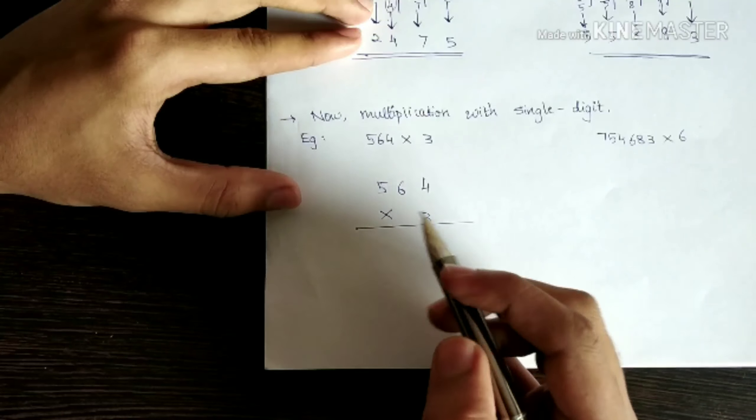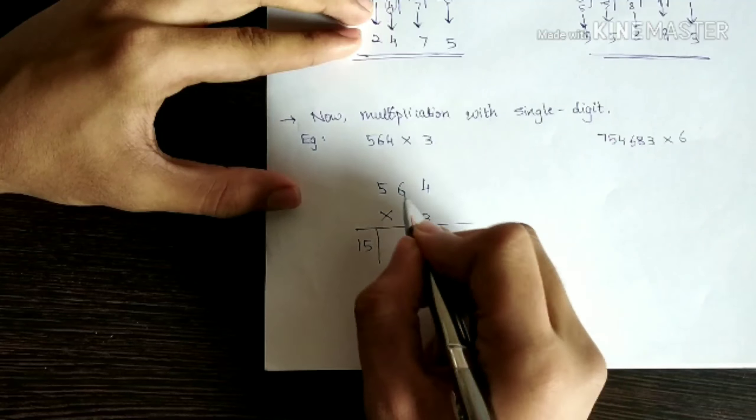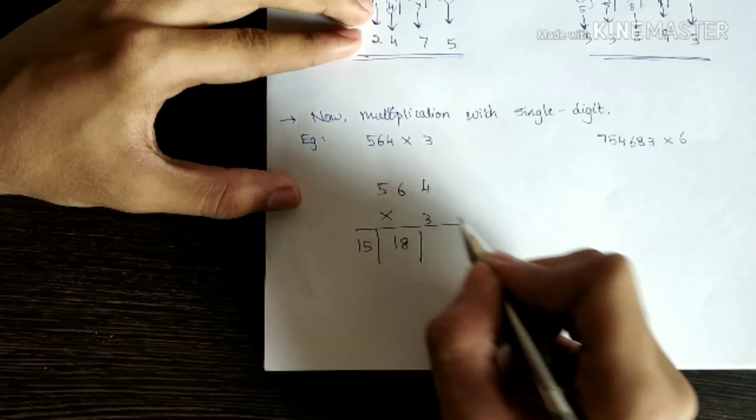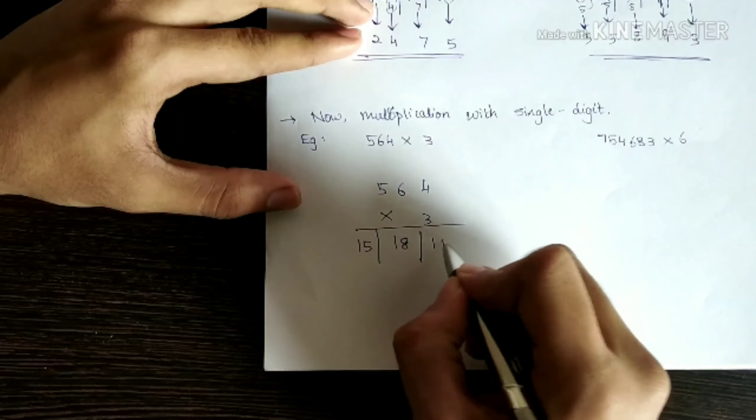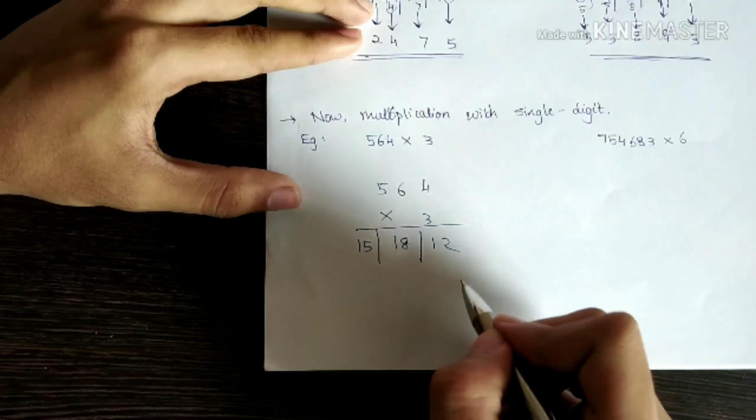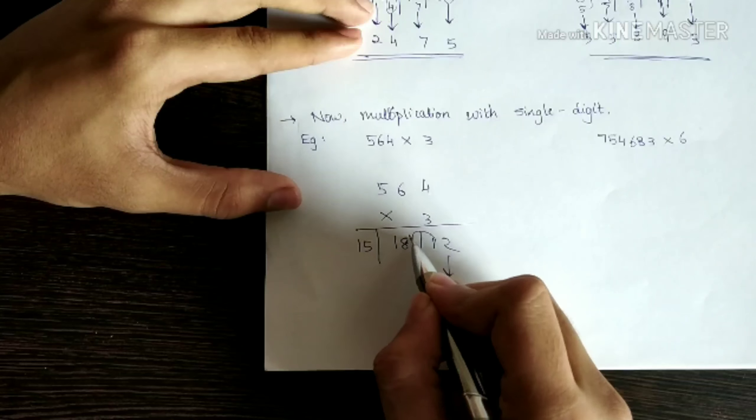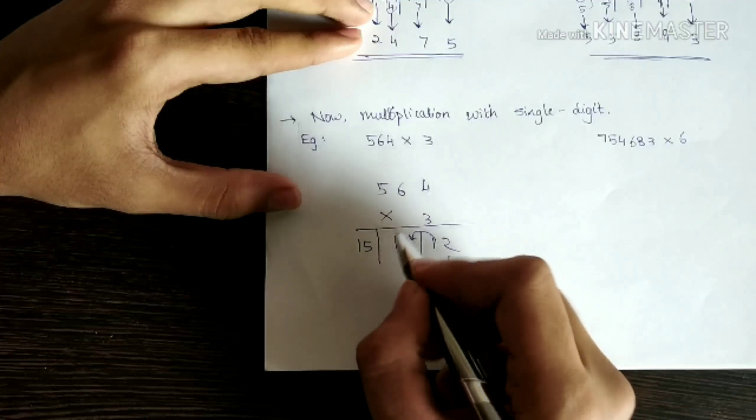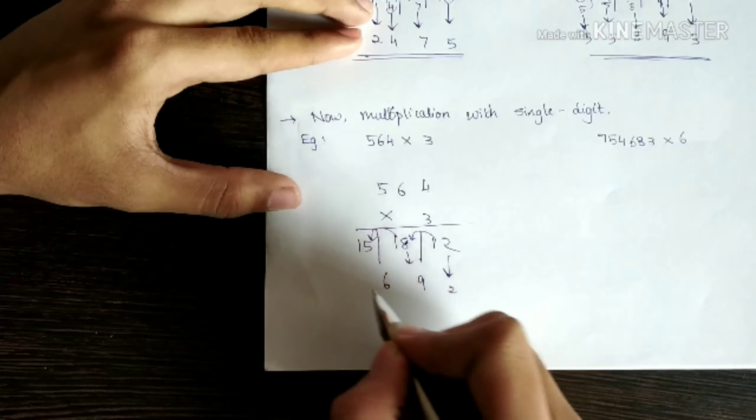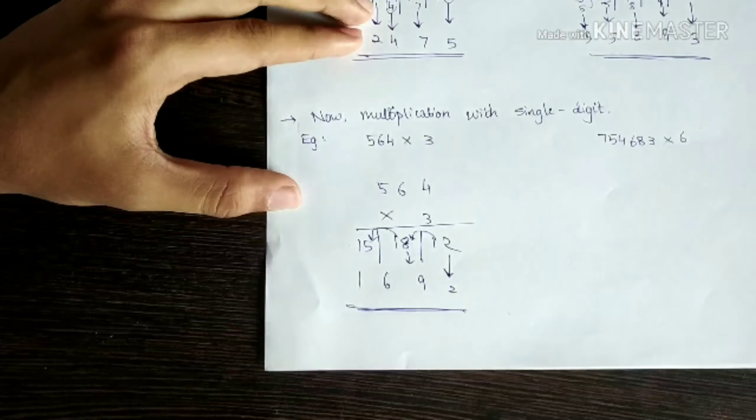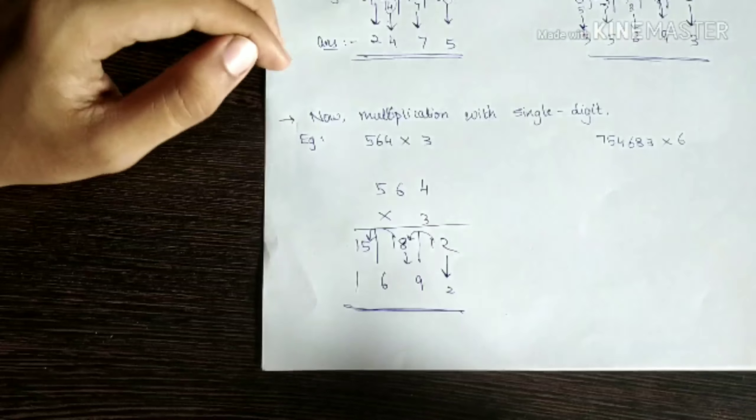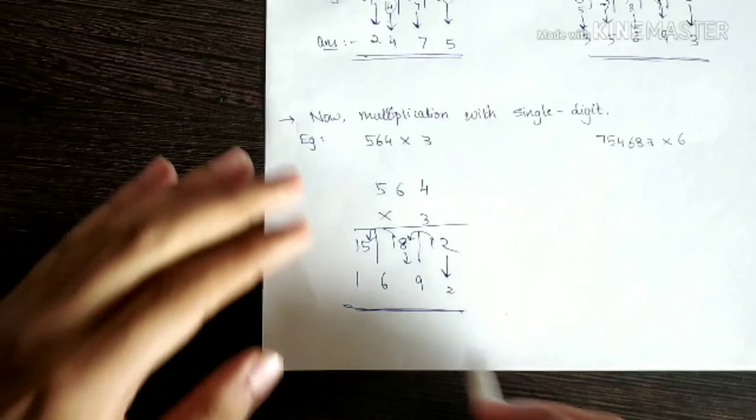Now what is three times five? It is fifteen. What is three times six? That is eighteen. What is three times four? Twelve. Now apply the balancing rule. Drop two. One plus eight is nine. Drop that. One plus five is six. Drop that. One is one. One six nine two. And that is the correct answer. You can check it out with a calculator if you want to verify.